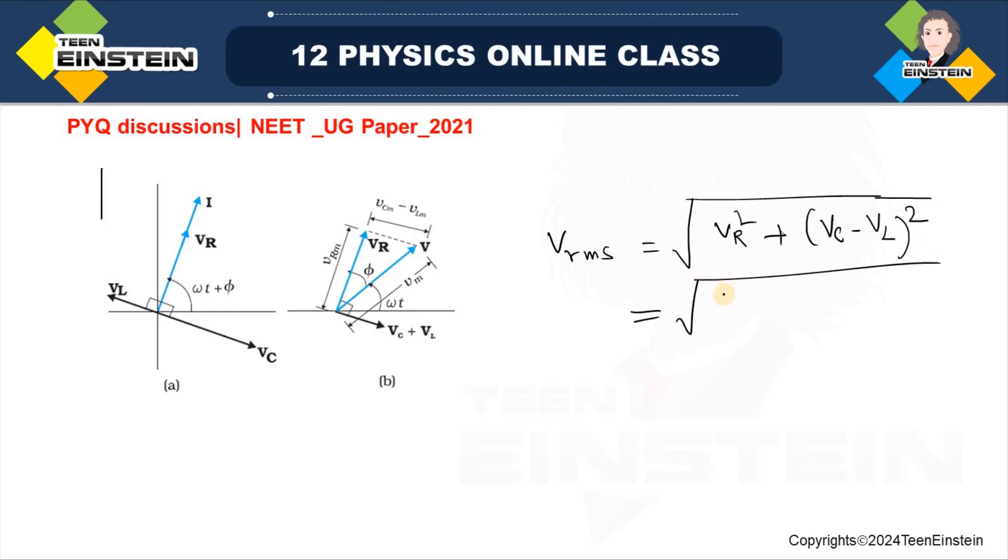So, from here I can write this is 40 square. This is 40 minus 10. That means 30 with a minus sign obviously here. So, this will give you actually 2500. So, that is 50. So, this is actually in volts.